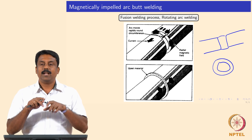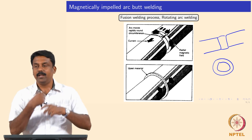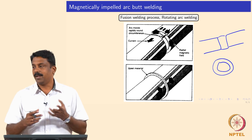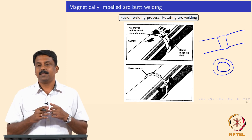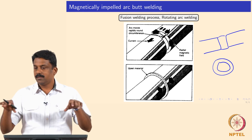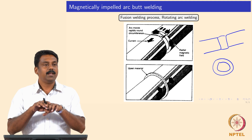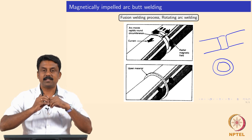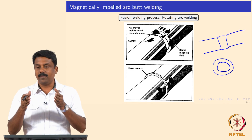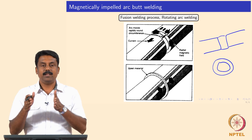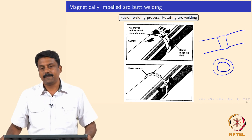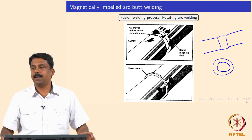Upsetting is very important because the molten material and molten liquid would contaminate the weld from the atmosphere - there will be oxide inclusions forming and we do not want that in the weld. So same as in flash butt weld, we do upsetting to expel the liquid metal and we have a mechanical coalescence of the heat-affected zone which is next to the molten surface - that coalesces to form the weld.